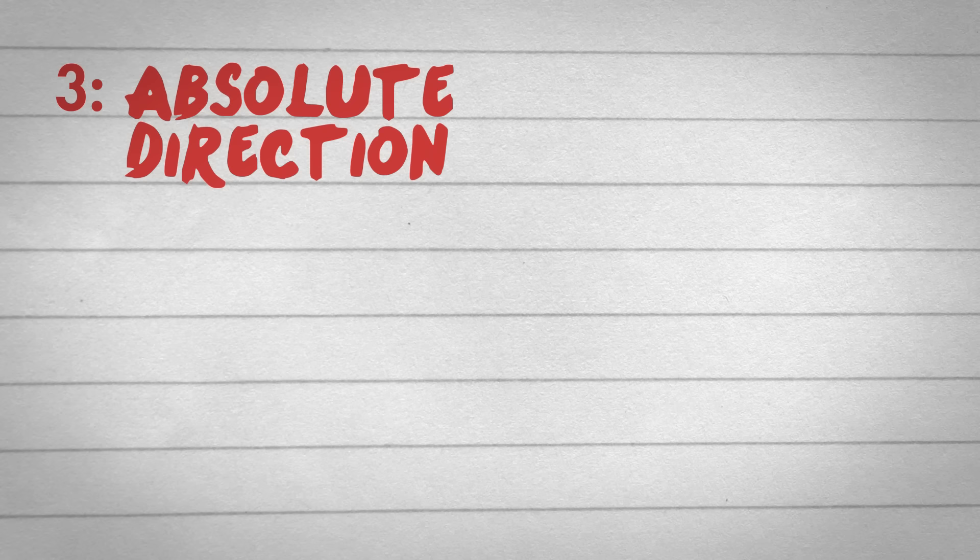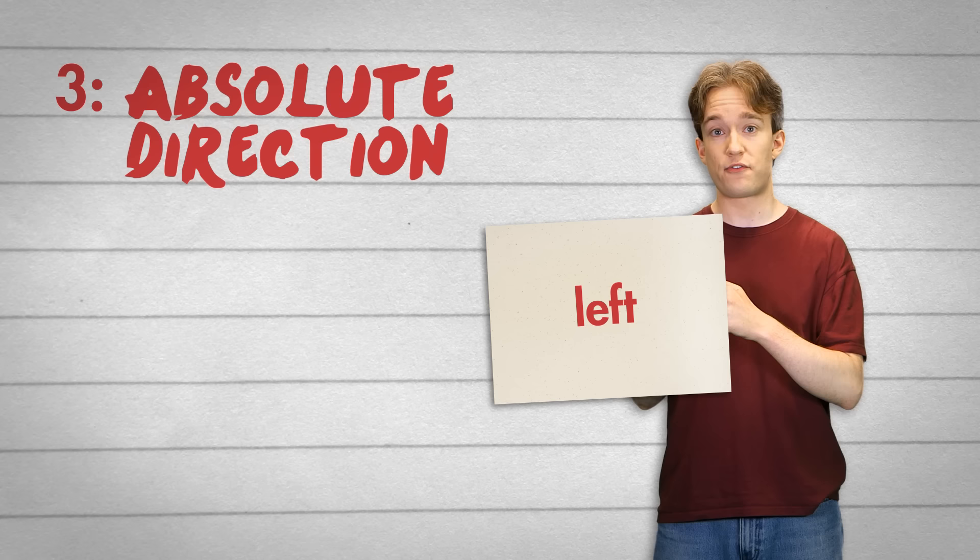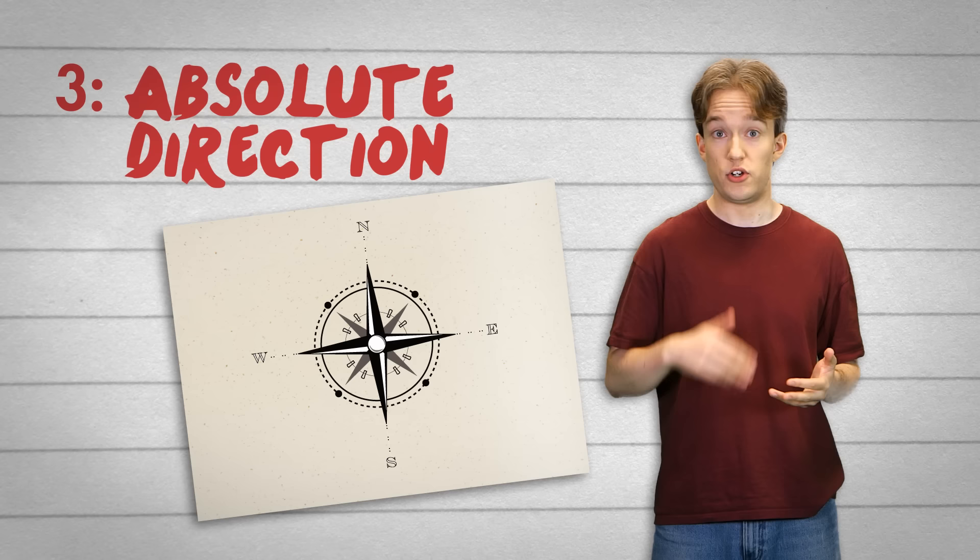Number three: absolute direction. This isn't all that useful, but it is cool. In a few languages, notably a couple of Australian ones like Guugu Yimithirr — that's the one that's been extensively studied — there are no words for left, right, forward and backward. Instead, you always use cardinal directions: the equivalent words for north, south, east and west.